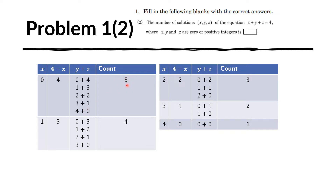For x equals 1, 4 minus x is 3, meaning y plus z must be 3. The possible combinations of non-negative integers that add up to 3 are: 0 plus 3, 1 plus 2, 2 plus 1, and 3 plus 0 — there are 4 of them. For x equals 2, y plus z must be 2. The combinations are 0 plus 2, 1 plus 1, and 2 plus 0 — there are 3 of these combinations.